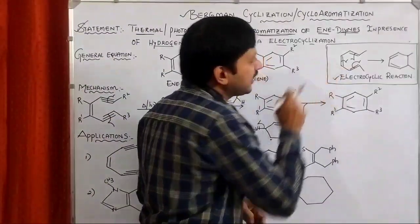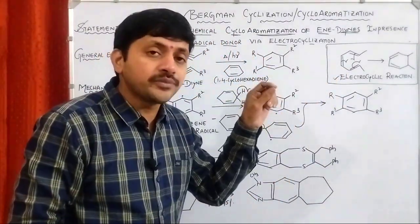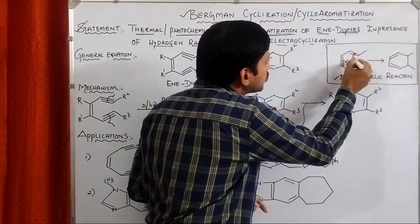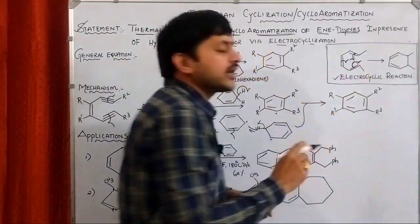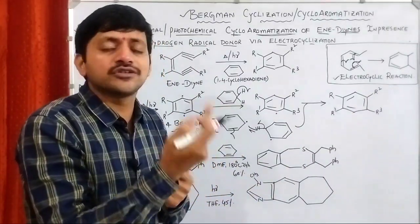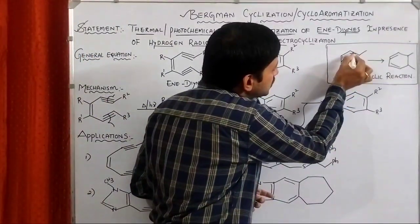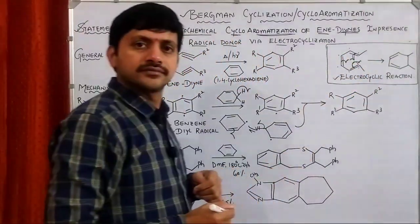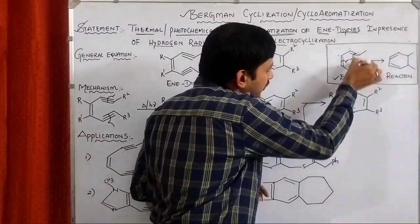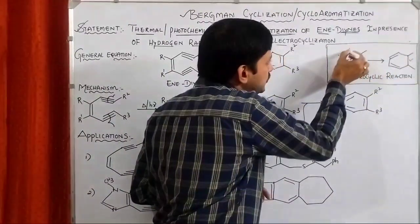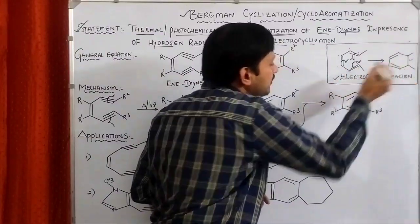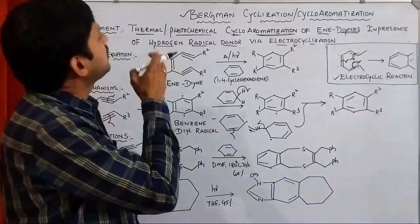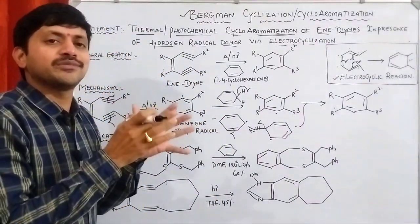The reactant has alternating pi bonds and is going to be involved in the cyclization procedure. The homolytic cleavage of pi bonds takes place, producing radicals. These radicals can form a cyclization — a single bond — and these two can form a pi bond and these two can form a pi bond. Such reactions are commonly called electrocyclic reactions, and in Bergman cyclization we are using this same concept.